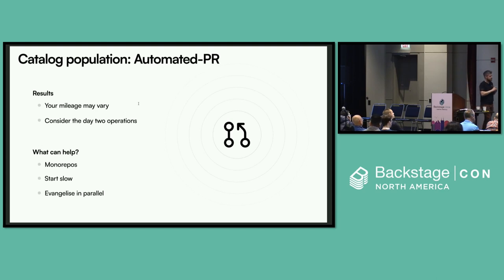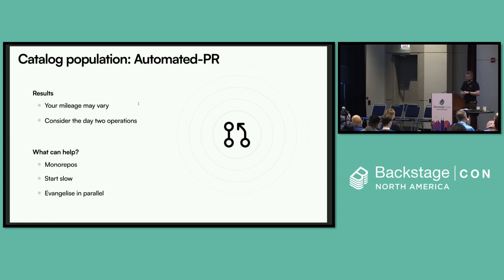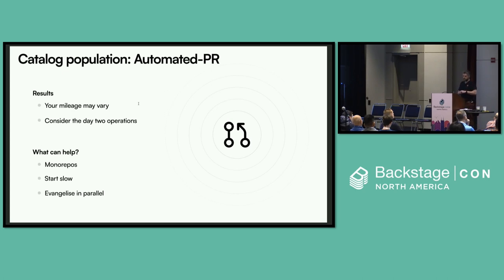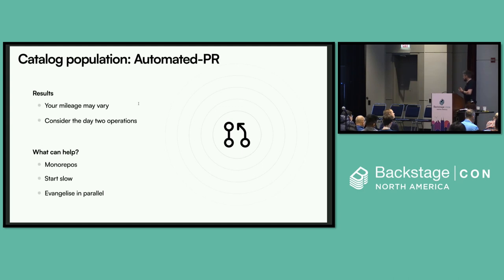Monorepos are the special case where the automated PR approach actually seems to work. I spoke to a company who had a gigantic monorepo with 2,000 components, and they scripted it so it created catalog-info YAML files for every directory. They got one really trusted person to review and merge the pull request, and bingo — they had a populated catalog. Otherwise, you're going to have to start slow, get a group of early adopters into the catalog, make their metadata rich, install plugins that work really well, and use those to evangelize Backstage to the rest of the organization.